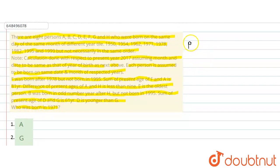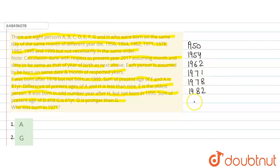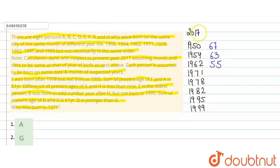Here you can see the years listed: 1950, 1954, 1962, 1971, 1978, 1982, 1995, and 1999. Subtracting from 2017, the present ages are: 67, 63, 55, 46, 39, 35, 22, and 18 respectively.